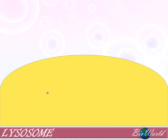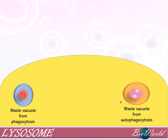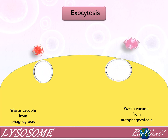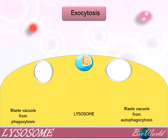Digestion by the lysosome during phagocytosis as well as autophagocytosis produces waste vacuoles. The waste within the vacuole can become toxic if it remains within the cell. So these vacuoles move towards the plasma membrane and fuse with it to carry out exocytosis, allowing the waste material to exit the cell. Some lysosomes will also carry out exocytosis so that their hydrolytic enzymes can be released out of the cell.